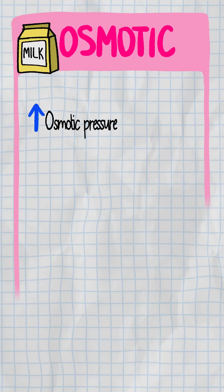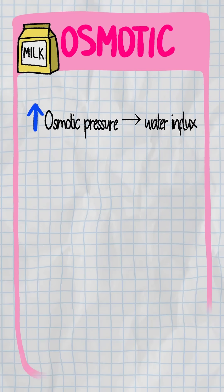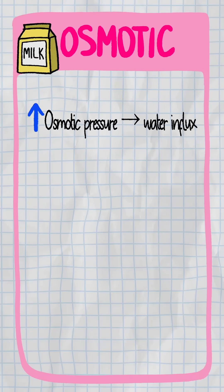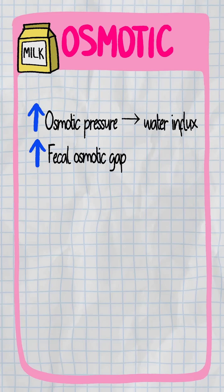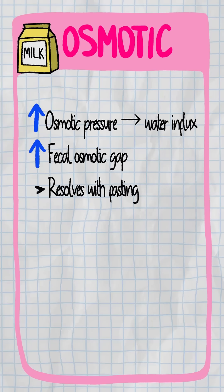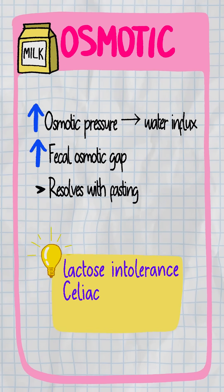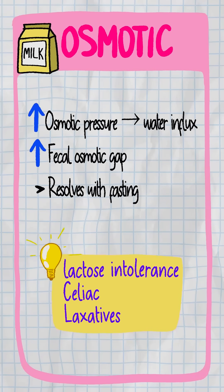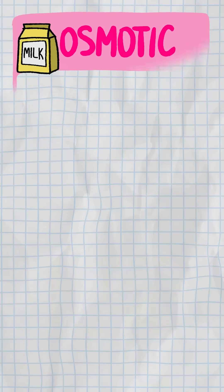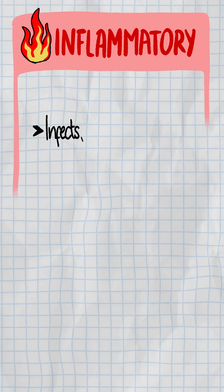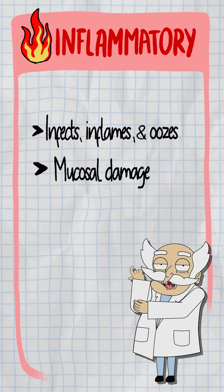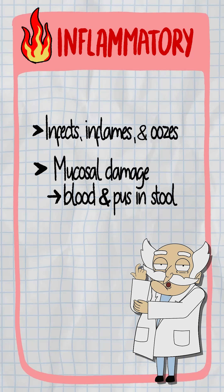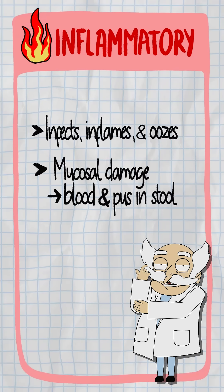Osmotic diarrhea is the greedy gut — pulls in water thanks to high osmotic pressure. Fecal osmotic gap is high, relieved with fasting. Think lactose intolerance, celiac disease, laxatives.